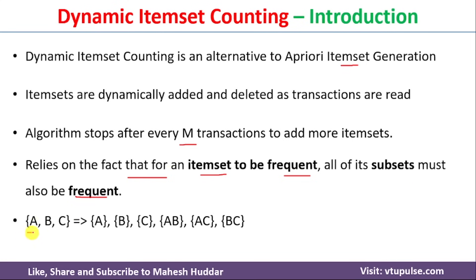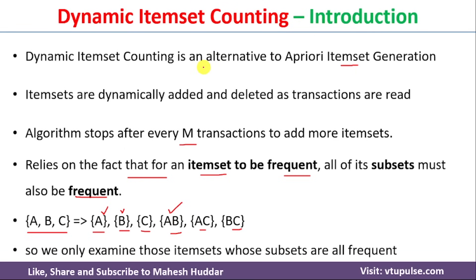For example, if ABC is one item set and we want to say that ABC is a frequent item set, its subsets — A, B, C, AB, AC, and BC — must all be frequent. Only then can we say ABC is a frequent item set. So in dynamic item set counting, if A is frequent and B is frequent, we consider AB and check whether AB is frequent. If A is frequent but B is not frequent, we do not consider AB.